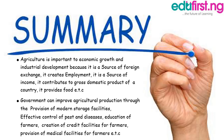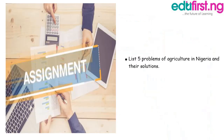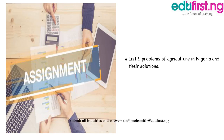Government can also improve agriculture through effective control of pests and diseases, education of farmers, creation of credit facilities for farmers, and provision of medical facilities for farmers. Hope you enjoyed this lesson. Now for your assignment: list 5 problems of agriculture in Nigeria and their solutions.